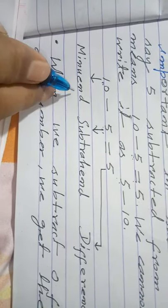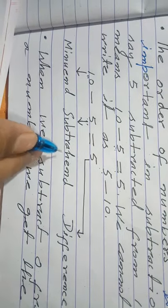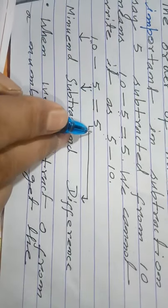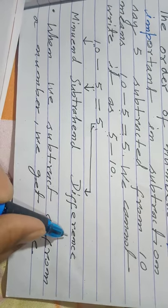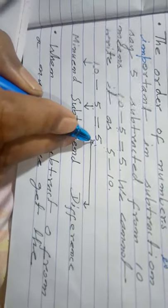10, 10 is minuend. And 5 is subtrahend. And 5, this 5 is difference. 10 minus 5 equal to 5.